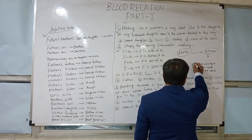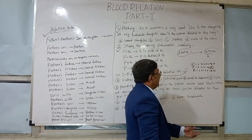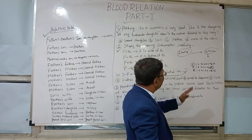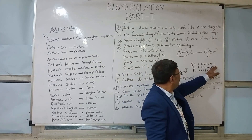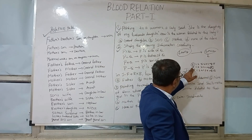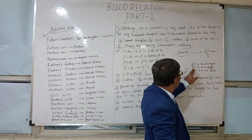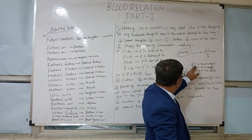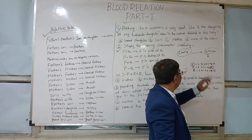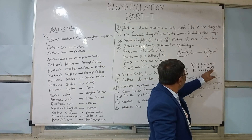So you can see here: J is sister of F, and F is son of R. R is wife of B. What is the relation between R and J? Since F is son of R, and J is sister of F, J is also daughter of R. So R is mother of J.